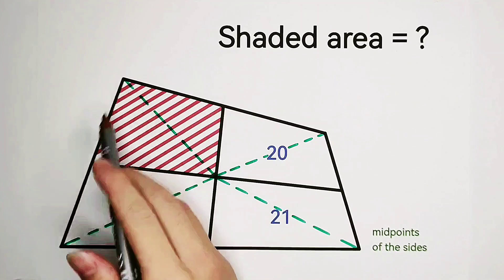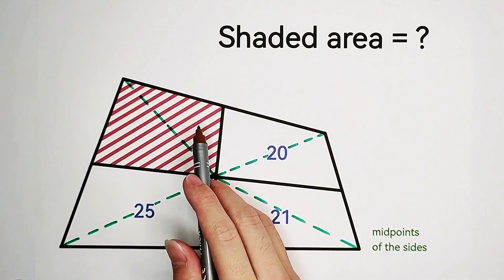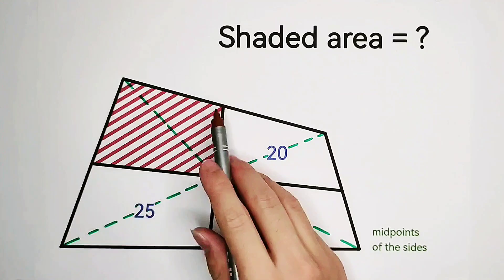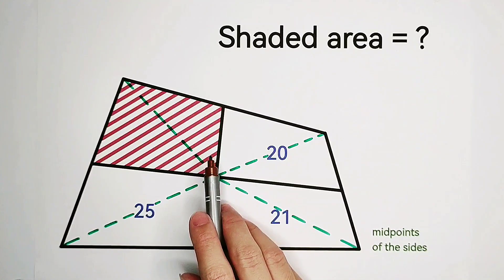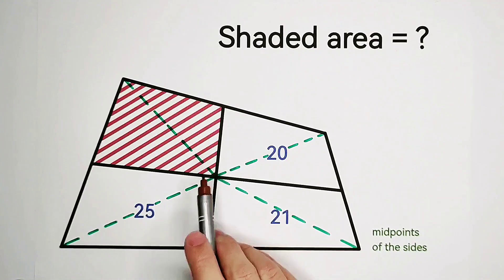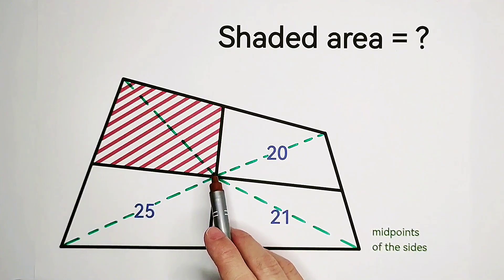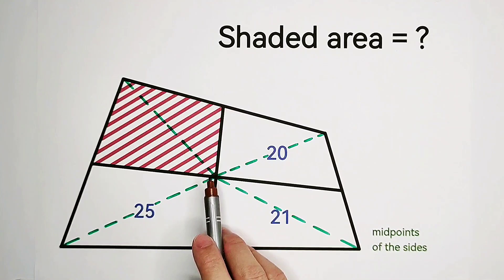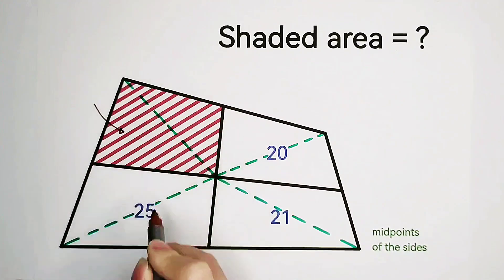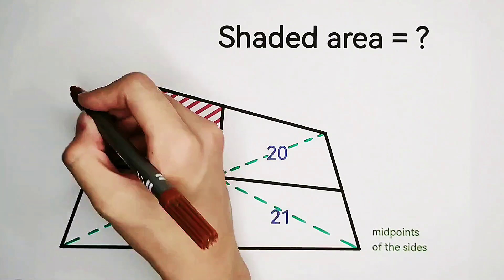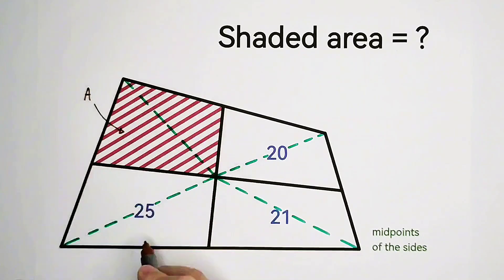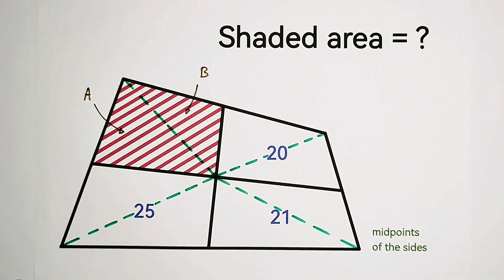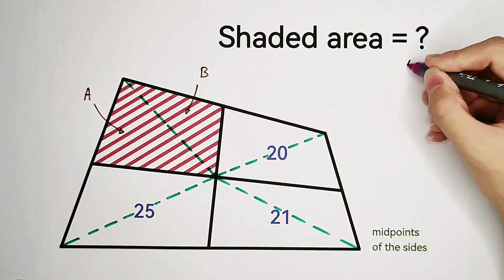I don't know the area of our shaded quadrilateral. What can we do? Now, it is divided into two smaller triangles. I also do not know the areas of the two triangles. Doesn't matter. We can suppose the area of this triangle is, for example, A. The area of this triangle is B, and then our shaded area is A plus B.